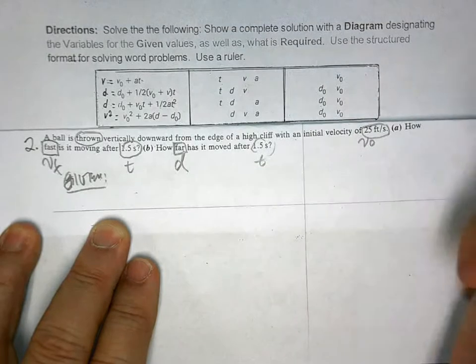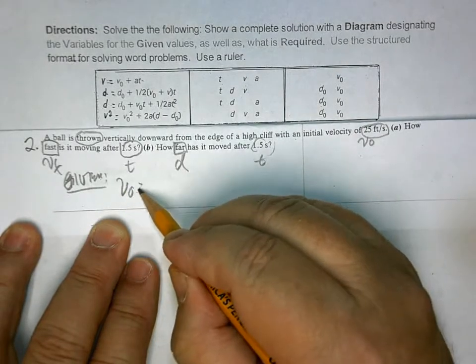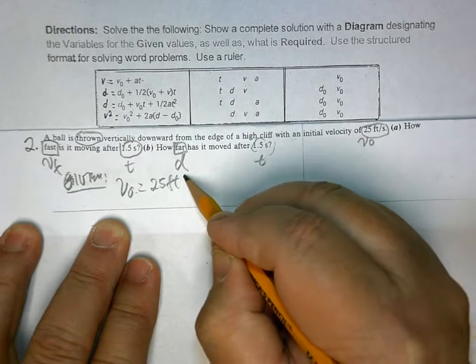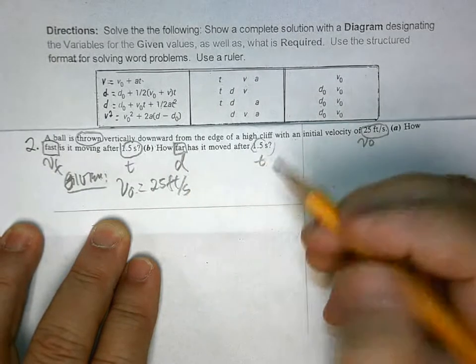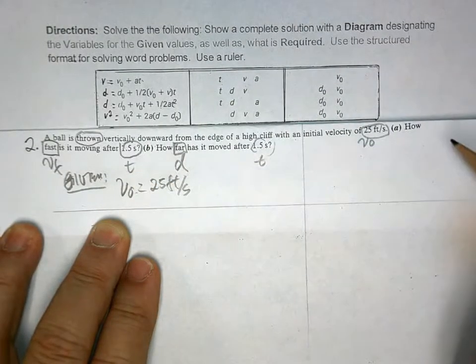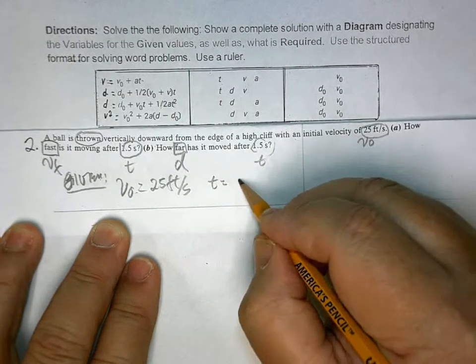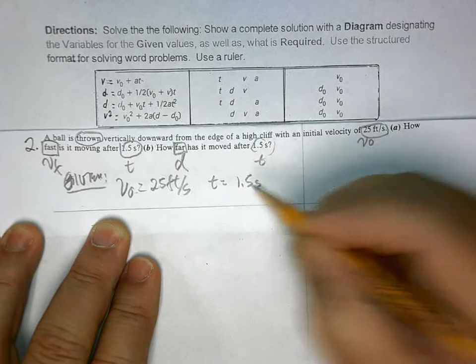What are you given? V0 is equal to 25 feet per second. And what else? T in both cases. So, T is equal to 1.5 seconds.